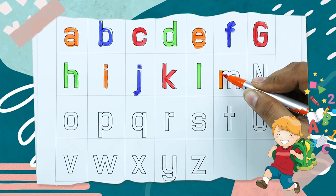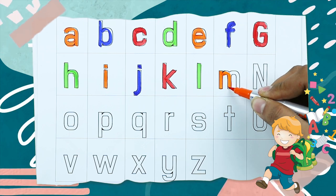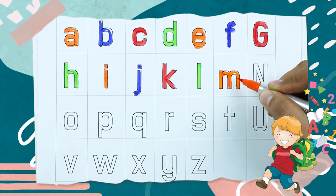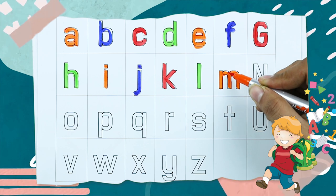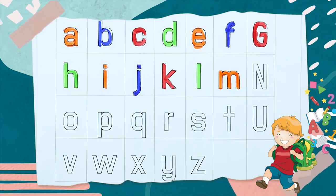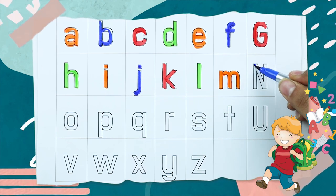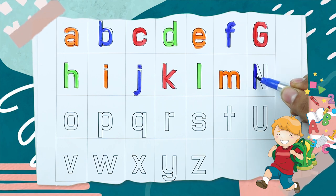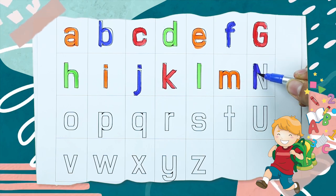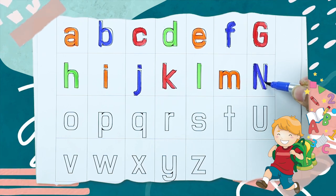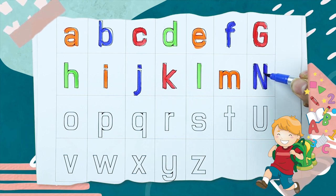M, it's M, M for monkey, M for monkey. N, it's N, N for nest, it's N.